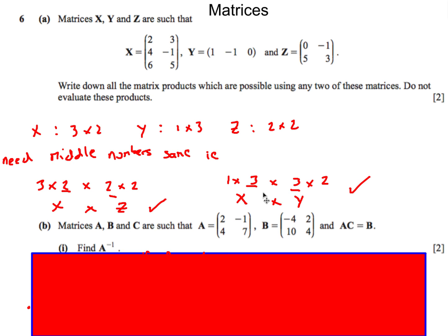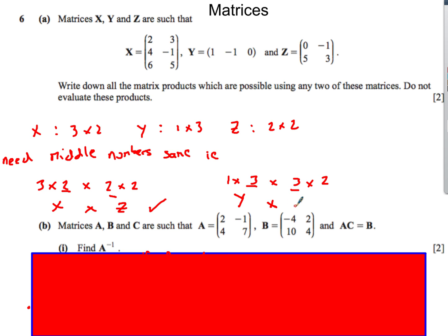The other valid product is Y times X — Y is a 1 by 3 matrix and X is a 3 by 2 matrix, so the middle number matches and we get a 1 by 2 result. Note that just because Y times X is possible doesn't mean X times Y is — in that case the middle numbers would be 2 and 1, which don't match. So we can do X times Z and Y times X.